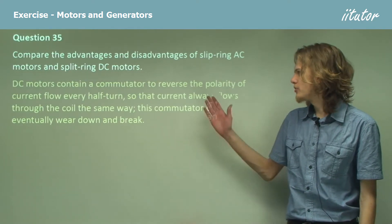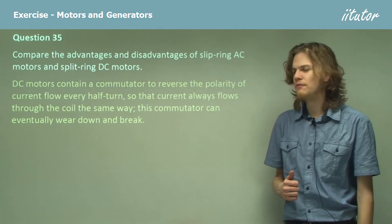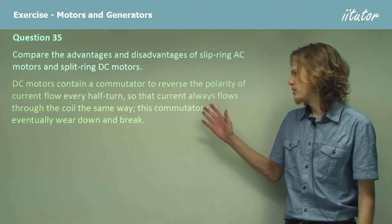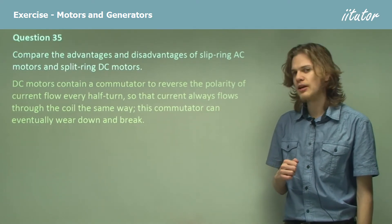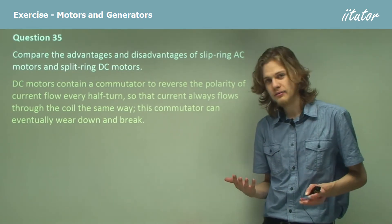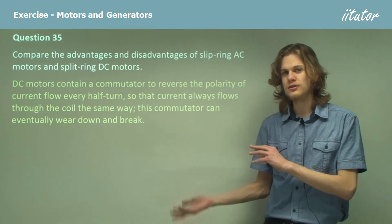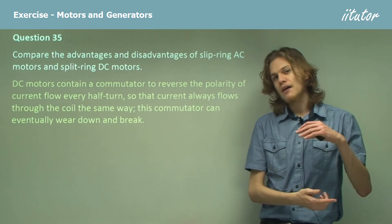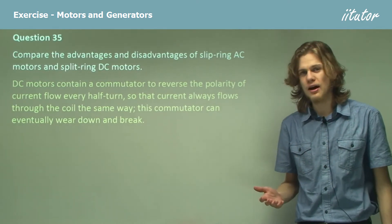DC motors contain a commutator to reverse the polarity of current flow every half turn so that current always flows through the coil in the same way. This commutator can eventually wear down and break because the carbon brushes connected to the commutator have to be in constant contact and will eventually wear down.